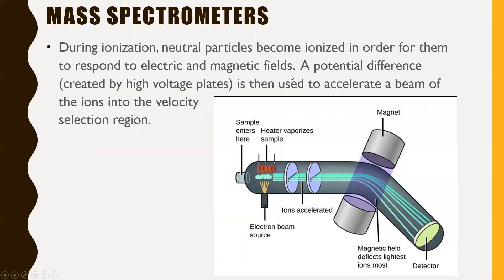Here's a diagram showing kind of how it works — you can have a look at that. During ionization, neutral particles become ionized in order for them to respond to electric and magnetic fields. A potential difference created by high voltage plates is then used to accelerate a beam of the ions into the velocity selector region, which is between two parallel electric and magnetic fields.